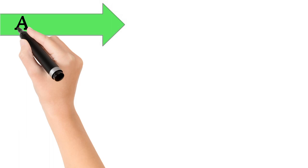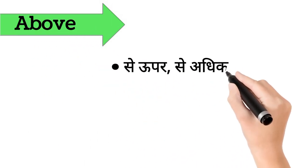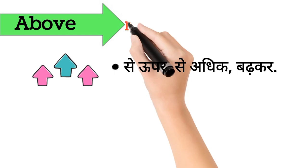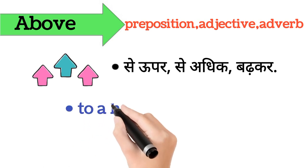Above. Above ka arth hai, se oopar, se adhik, barhkar. Above word preposition, adjective, adverb form mein aata hai. It's also called, to a higher place than, over.